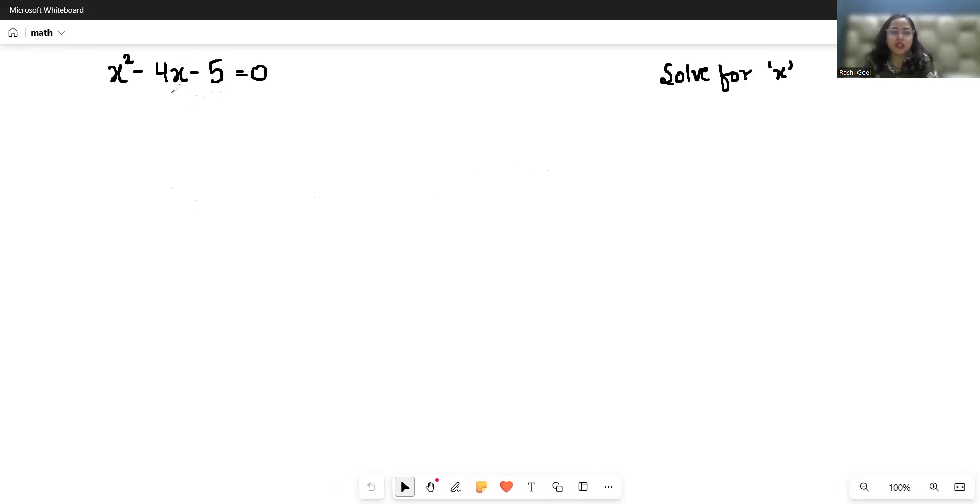In factorization method, you have to break the middle term, -4x, into two numbers such that when you add the numbers you get -4, and when you multiply those numbers you get -5. These two numbers can be -5x and x, because when we add we get -4x, and when we multiply these two numbers we get -5.